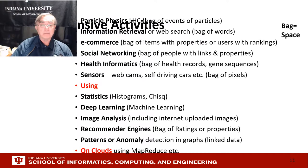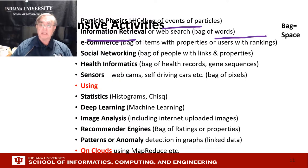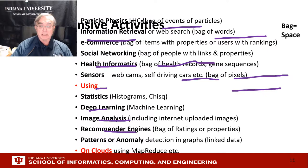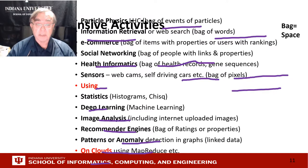Here are some data-intensive activities. Particle physics is a bag of events. Information retrieval is a bag of words. E-commerce is a bag of items or users. Social networking is a bag of people with links and properties. Health informatics is a bag of health records or gene sequences. Census is a bag of pixels. These applications use statistics, deep learning, image analysis, recommender engines, or anomaly and outlier detection — all running on cloud, with variants of metrics.